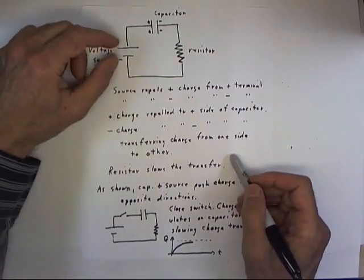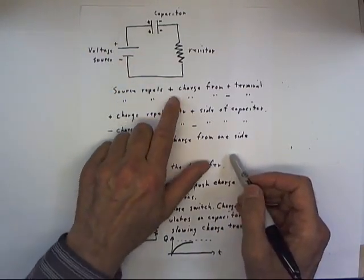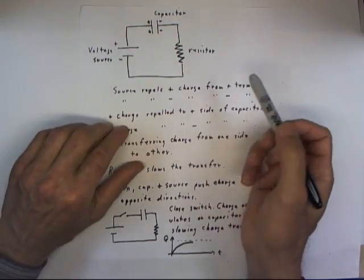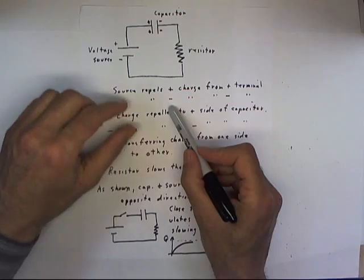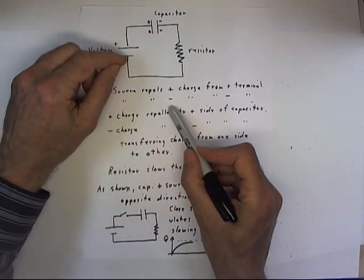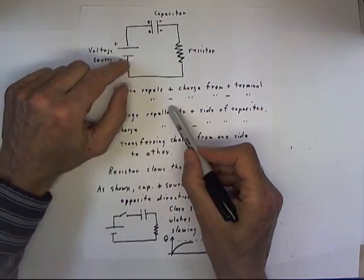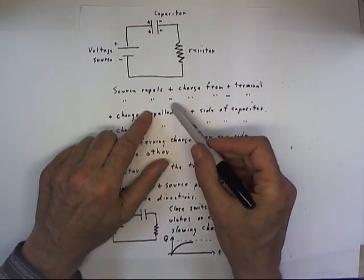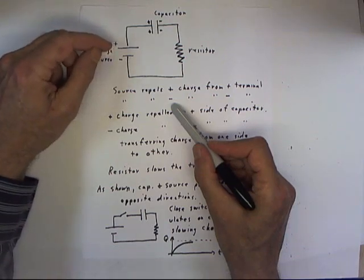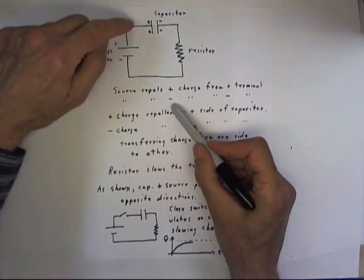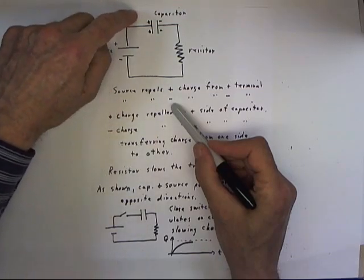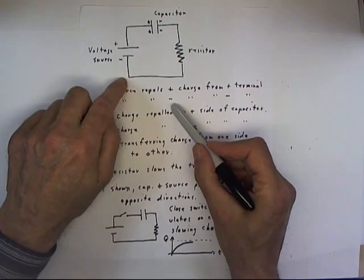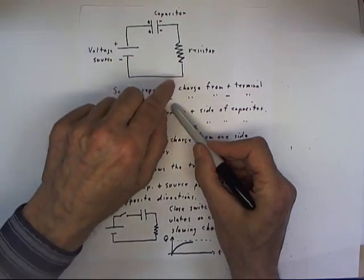More specifically, your voltage source has the ability to repel positive charges from this end or to repel negative charges from this end. The positive side would also have the ability to attract negative charges toward it, just as it repels the positive charges. The negative terminal would attract positive charges and repel negative charges.